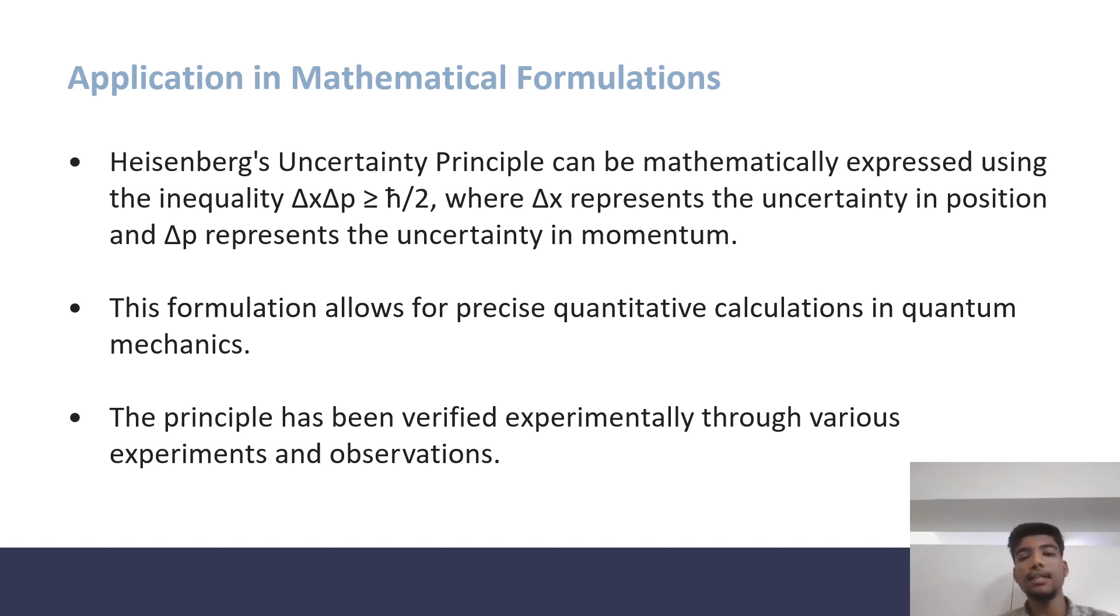Heisenberg's Uncertainty Principle can be mathematically expressed using the inequality Δx·Δp ≥ ℏ/2, where Δx represents the uncertainty in position and Δp represents the uncertainty in momentum.